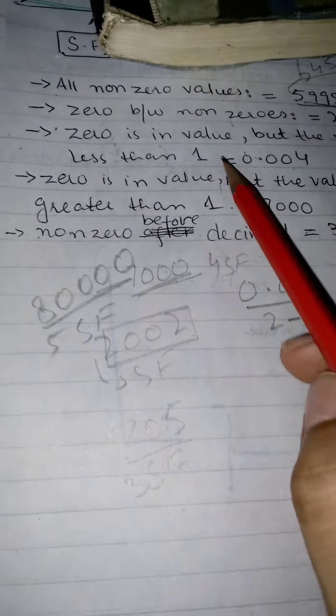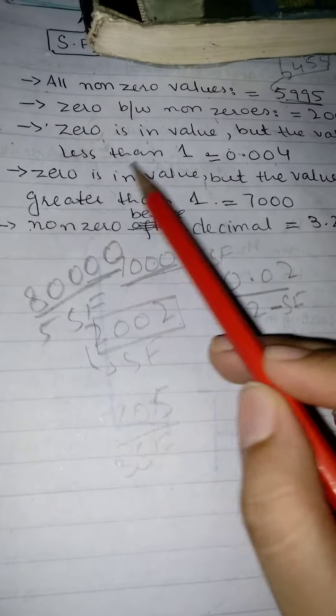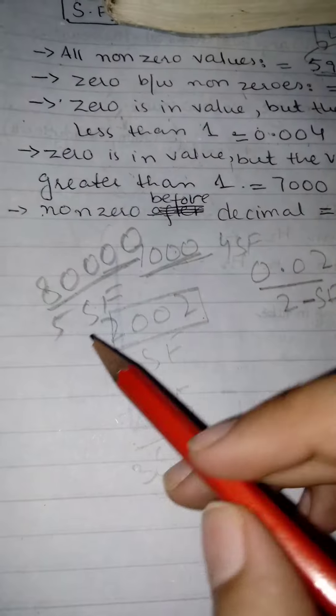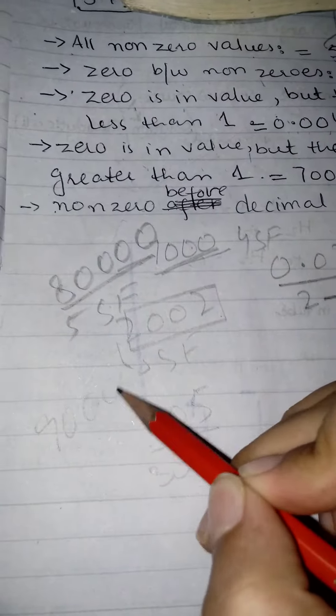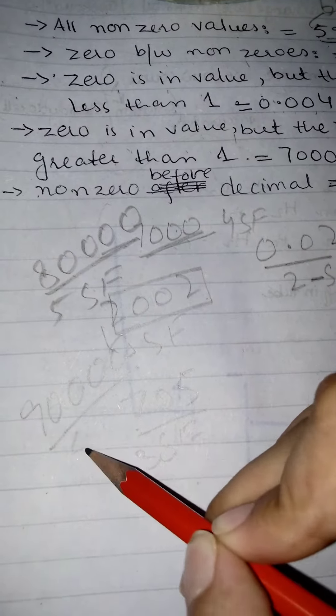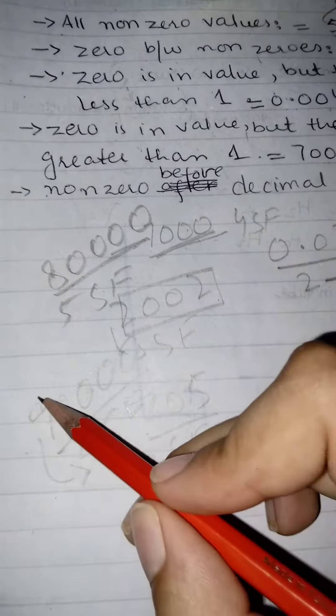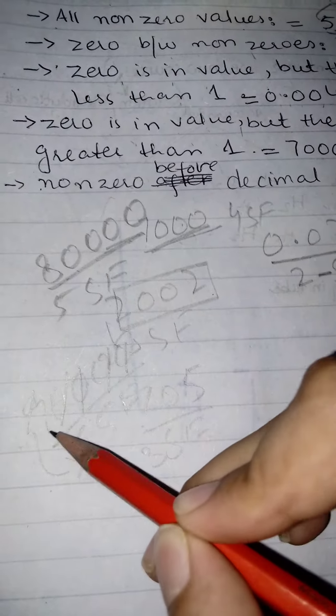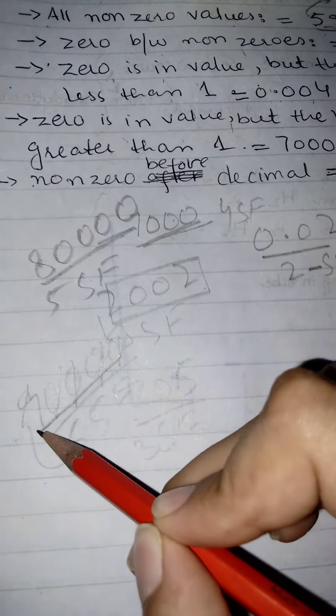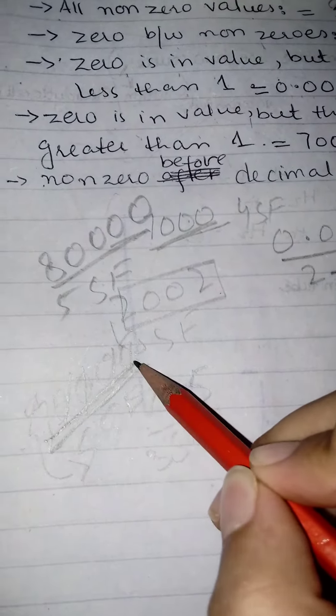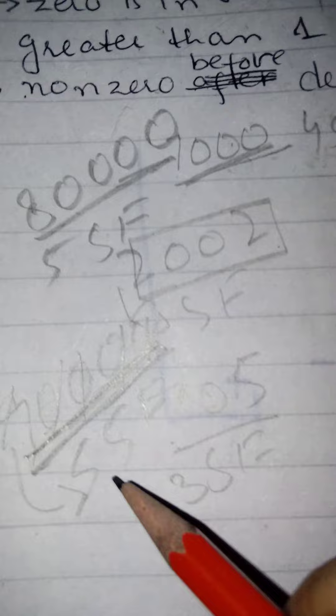As I told, when the value is greater than 1 but 0 is present in the value, for example 90,000, we are having five significant figures in this number: one, two, three, four, five. This is a greater than one value and these all are the significant figures we have.